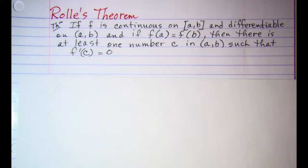and if f of a is equal to f of b, then there's at least one number c in the open interval from a to b such that f prime of c is equal to 0.